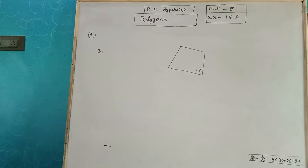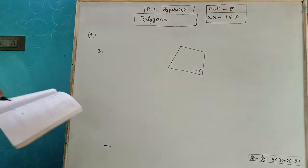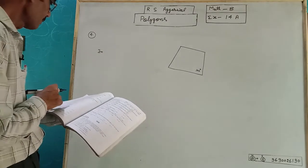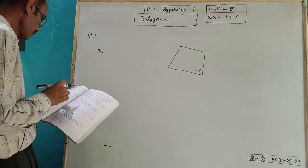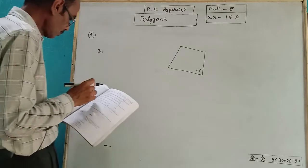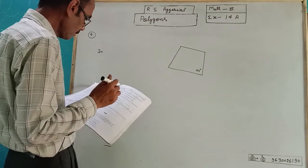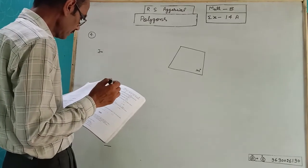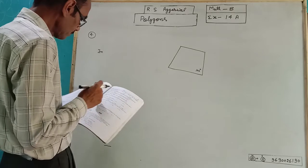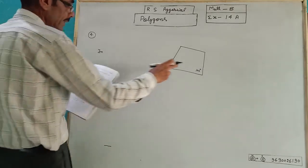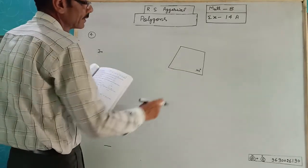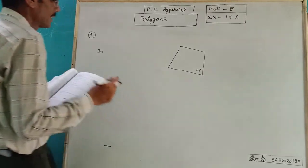8th class student, exercise 14a polygons. Question number 4 is: is it possible to have a regular polygon with each interior angle equal to 100 degrees?